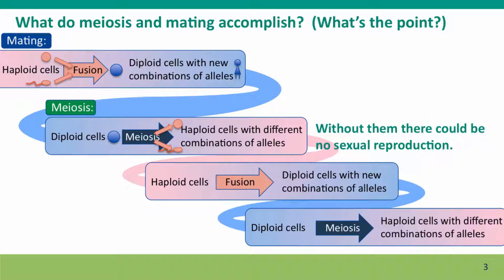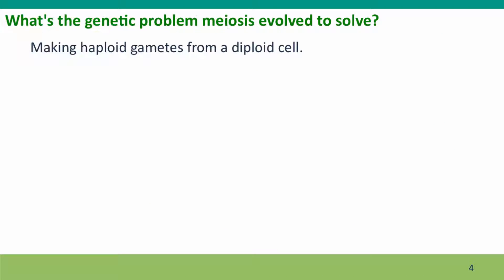This is just a reminder of what meiosis and mating accomplish. In particular, what meiosis does is take a diploid cell and produce haploid cells with new combinations of alleles but still complete sets of genetic information. So the genetic problem that meiosis evolved to solve is making haploid gametes from a diploid cell — and just as mitosis does, it has to make sure those gametes get a complete set of chromosomes, but a haploid set rather than the two sets that were in the parent cell.